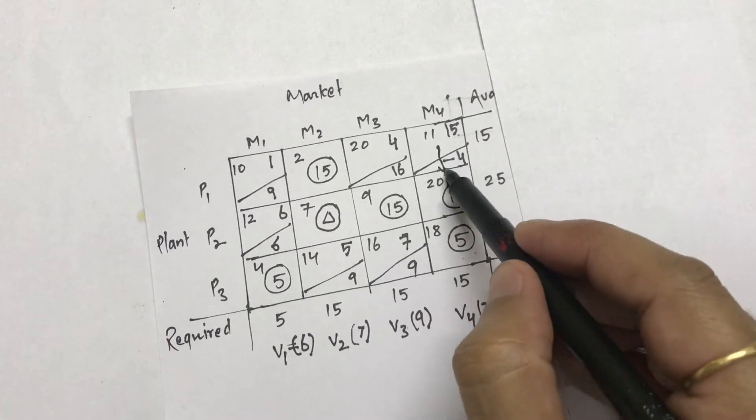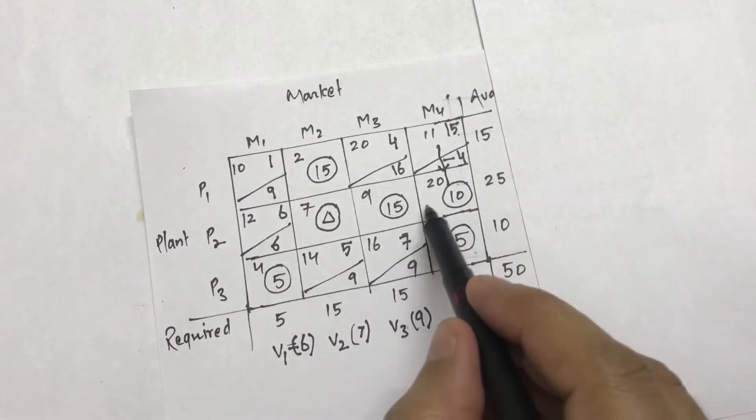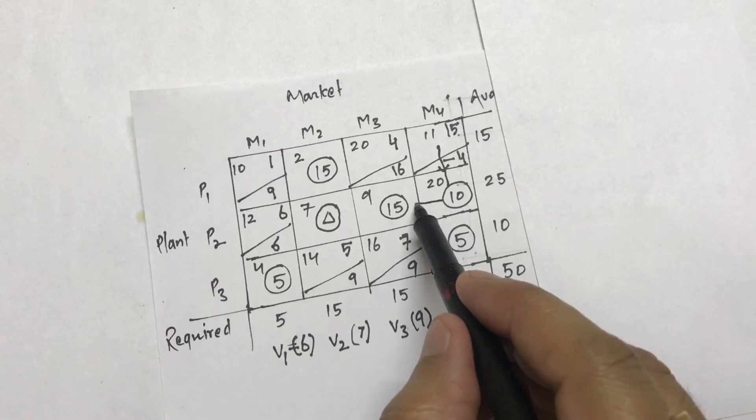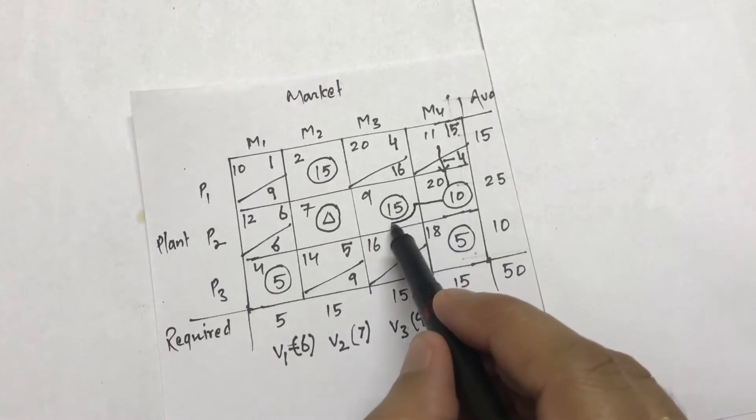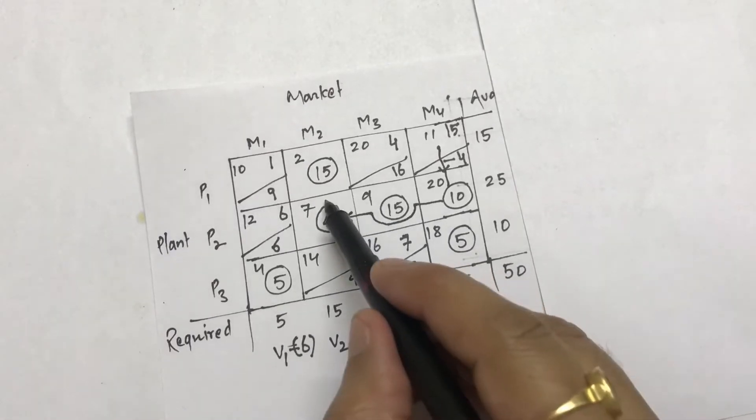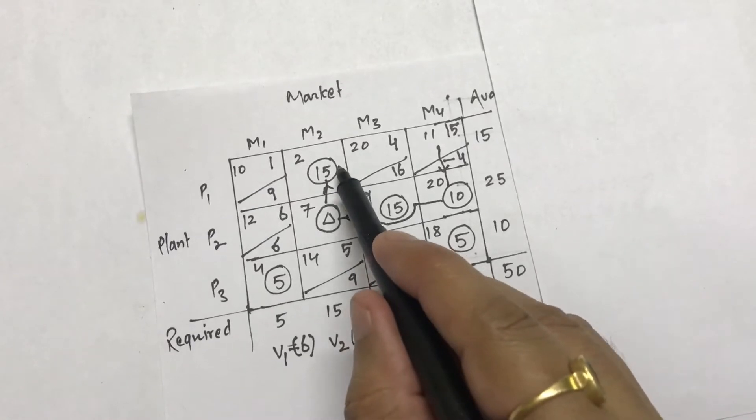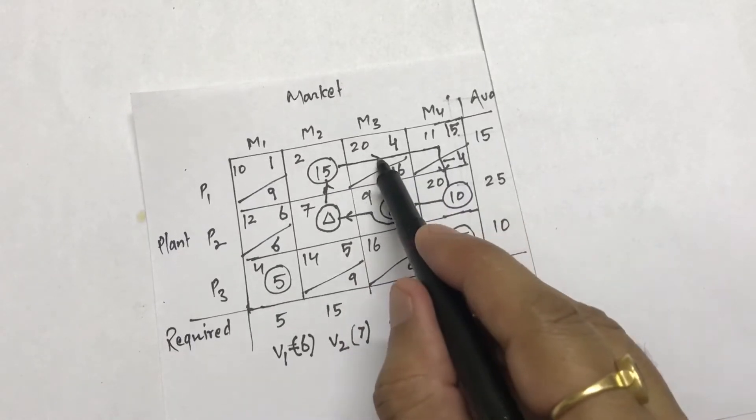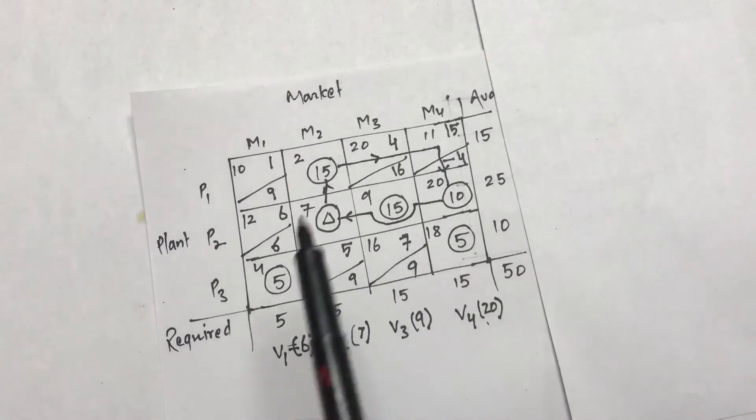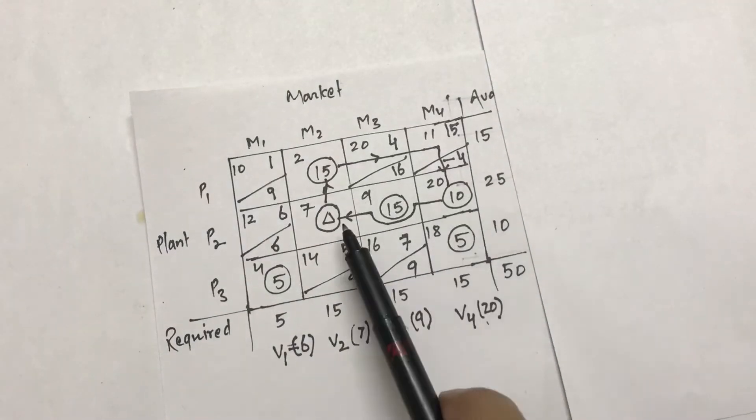The loop should always hit an allocation and then only should move. It should hit an allocation, it should move. So I'm going to leave this 15 right here, I'm going to hit that Delta, and then I'm going to move to 15 and I'm going to close this particular loop here.